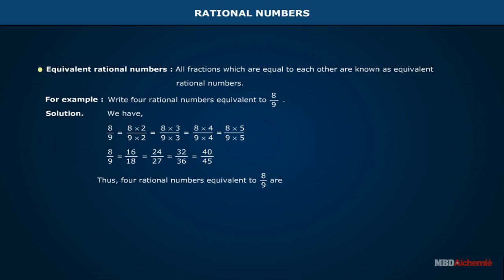Thus, four rational numbers equivalent to 8 by 9 are 16 by 18, 24 by 27, 32 by 36, and 40 by 45.